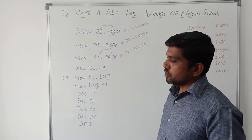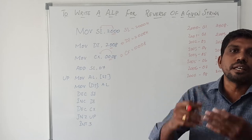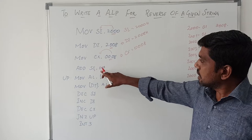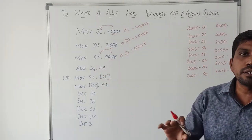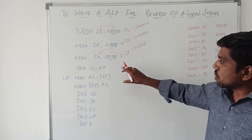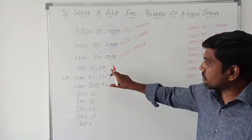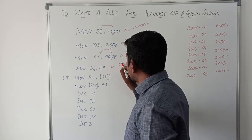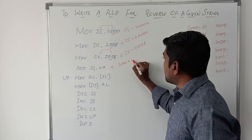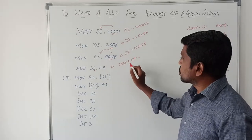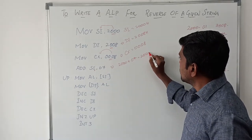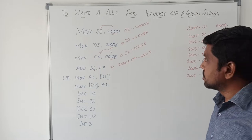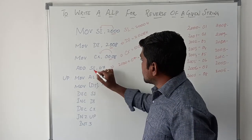So first you initialize the source index register value, destination index register value, then the count of numbers — how many numbers you transfer from source point to destination point. Then ADD SI, 07. This instruction is used for changing to reverse order. The starting address location of SI is 2000. So after adding 07 to SI, you get the memory location 2007. The starting address of the source index is 2007 after execution of this instruction. The result is stored in SI.